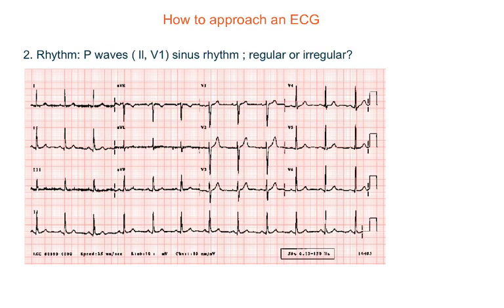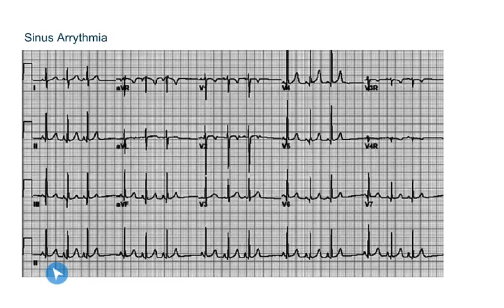The next step is to look at the rhythm, for which you have to look at the P wave first. The best leads to look at are lead 2 and V1. If P waves are present, then it is a sinus rhythm. Then you see if it is a regular or an irregular rhythm. If the R waves are equally spaced from each other, then it is a regular rhythm; otherwise it's not. For example, in this ECG: are there P waves? Yes, so it is a sinus rhythm. Is it regular? No, because the R waves are not equally spaced. The first three are a bit equal, but the fourth one is further away. So it is an irregular rhythm — this is known as sinus arrhythmia.